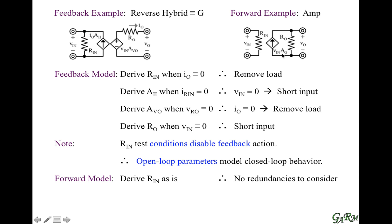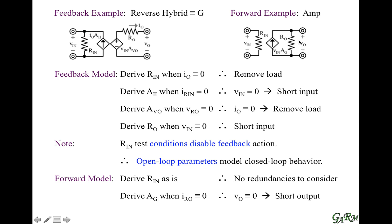When we derive the gain of the current source at the output, we need to nullify the effects of the output resistor. Since we're talking about current, the current going through the output resistor needs to be zero. The only way for the current through a resistor to be zero is for the voltage to be zero, so we short the output. This is a forward short circuit test.